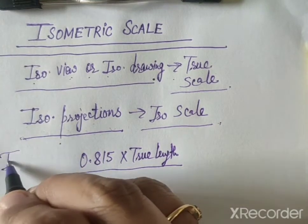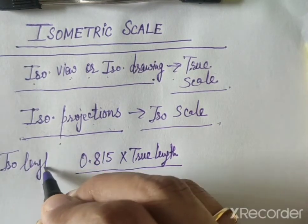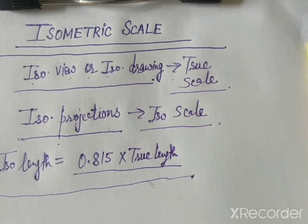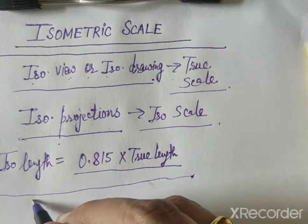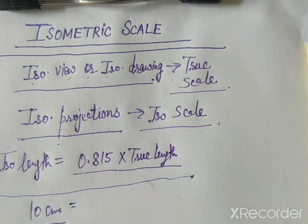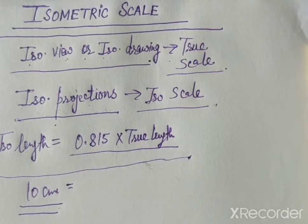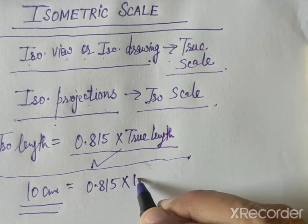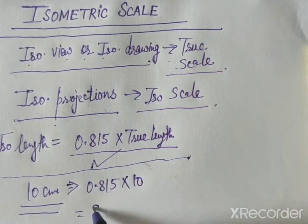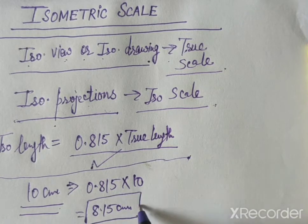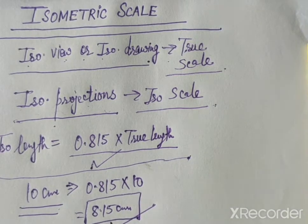Any isometric length is shortened by this. So if we want to find the isometric length of 10 cm, how much 10 cm will be seen in the case of isometric projection? So we will use this relationship. It is 0.815 multiplied by 10. So we will get 8.15 cm. So 10 will be taken as this, as isometric length.